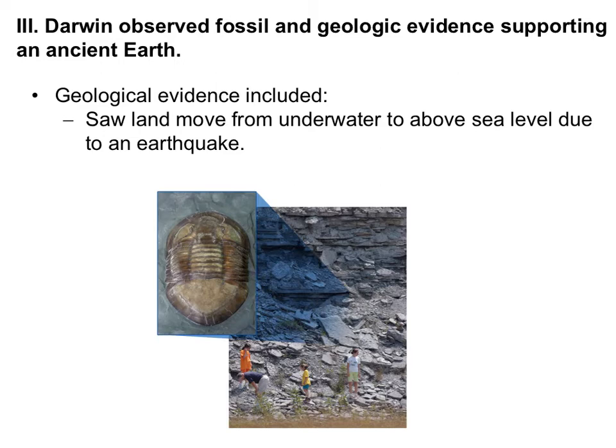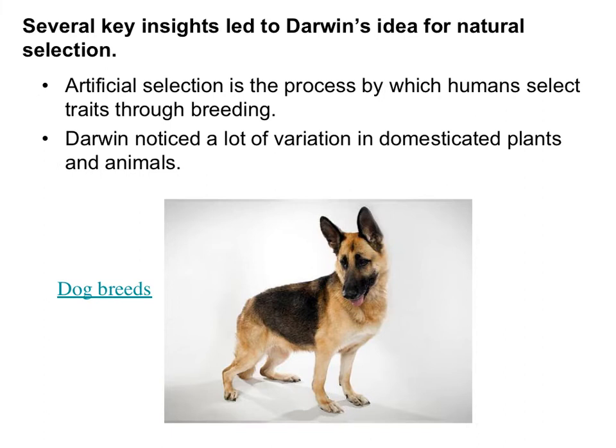Not only did Darwin have the fossil evidence, but he literally saw the Earth change in front of his eyes. That gave good evidence to support the idea that if that can change, what else can change? Maybe we did have different animals, and maybe they've changed over time. It really opened the door for all these other ideas of how Earth was different and why it became the way it currently is.